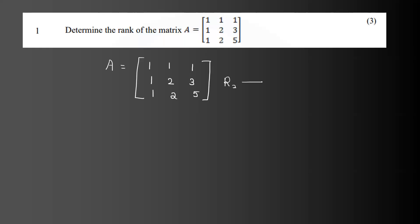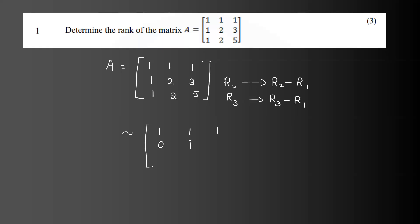R2 implies R2 minus R1. One minus one is zero. Two minus one is one. Three minus one is two.